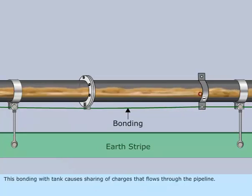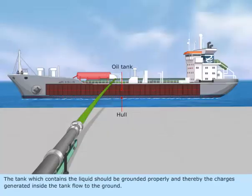This bonding with tank causes sharing of charges that flows through the pipeline. The tank which contains the liquid should be grounded properly, and thereby the charges generated inside the tank flow to the ground.